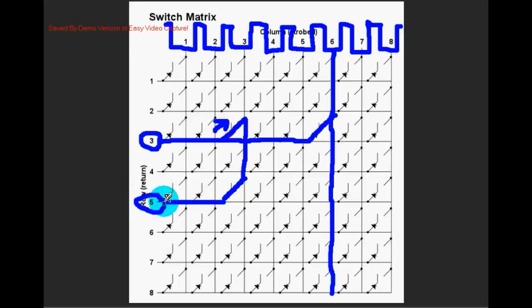What this creates is that the system, although the switch in column three row five was closed, it also thinks the switch in column six row five was closed.